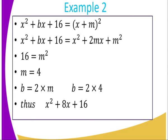Example 2 shows a different way of solving. We have x² + bx + 16 = (x + m)². When we expand the right side, we get x² + 2mx + m². Since m² = 16, then m = 4. Therefore, b = 2m = 2 × 4 = 8, giving us x² + 8x + 16.